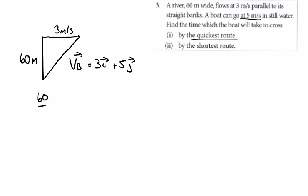The time taken to get across by the quickest route is 60 divided by 5, which is 12 seconds.